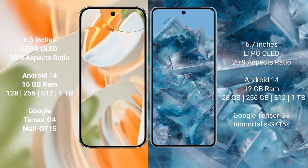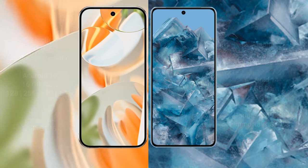The Pixel 9 Pro offers 128GB, 256GB, 512GB, and 1TB internal storage options, with the Google Tensor G4 processor and Mali G715 GPU. The Google Pixel 8 Pro comes with 12GB RAM and 128GB, 256GB, 512GB, and 1TB internal storage, with the Google Tensor G3 processor and G715s GPU.